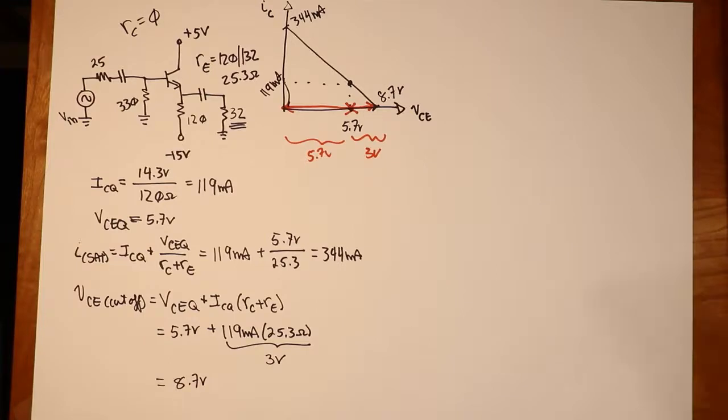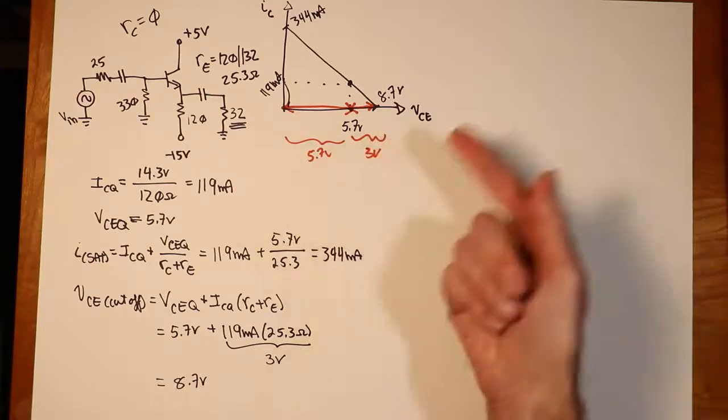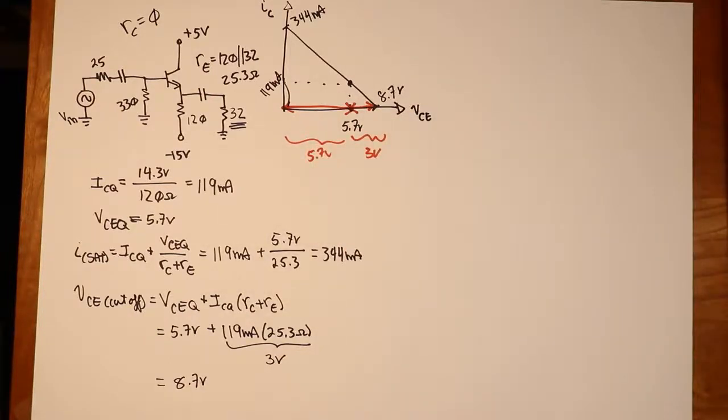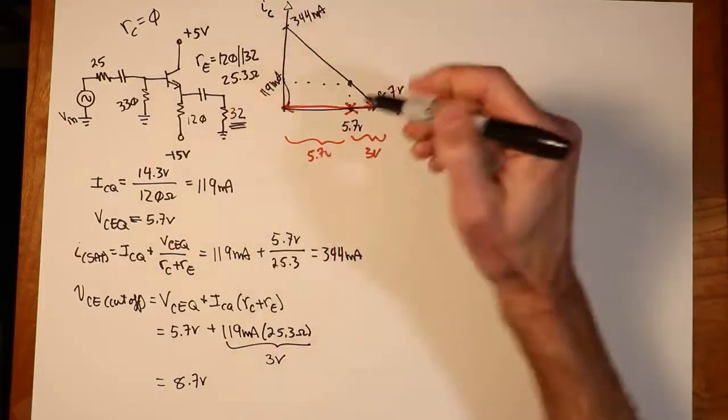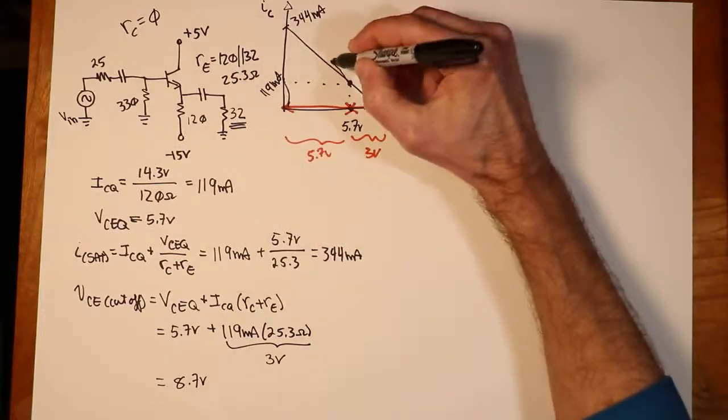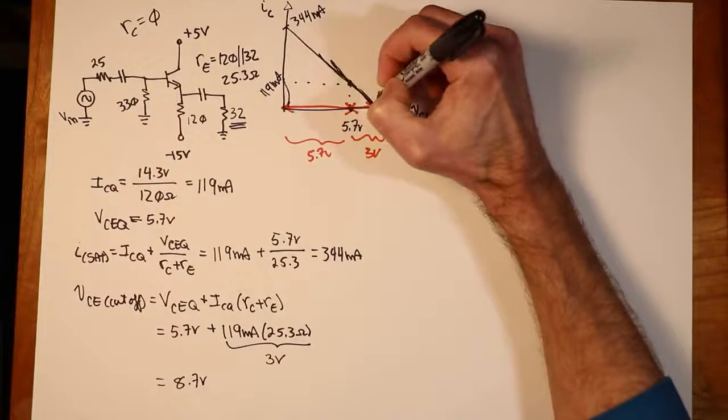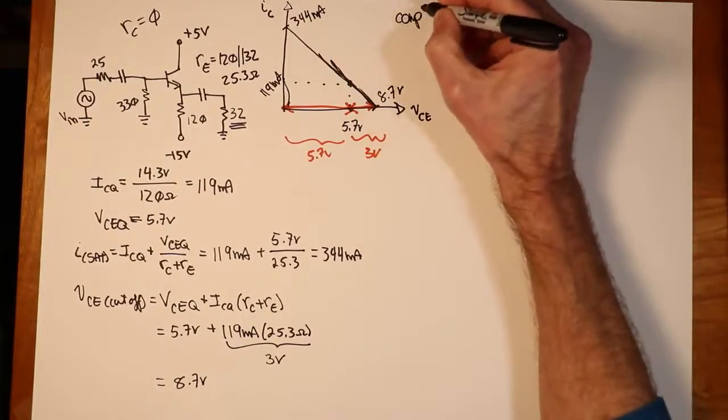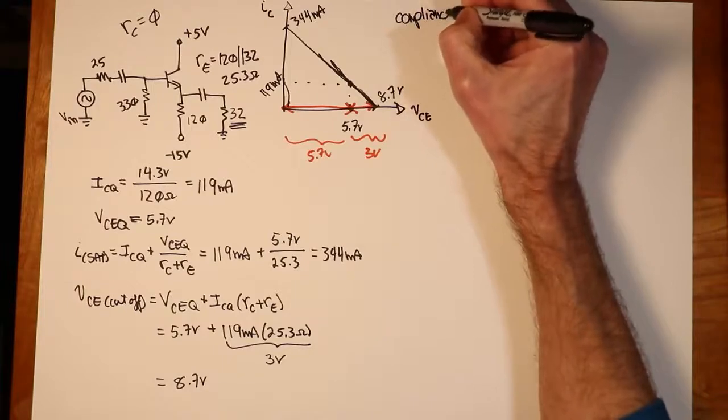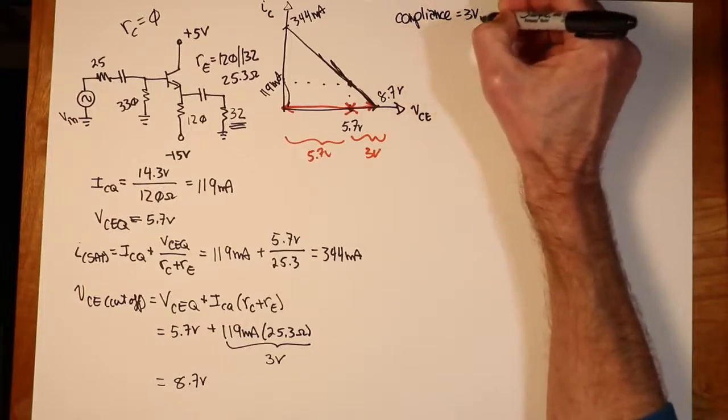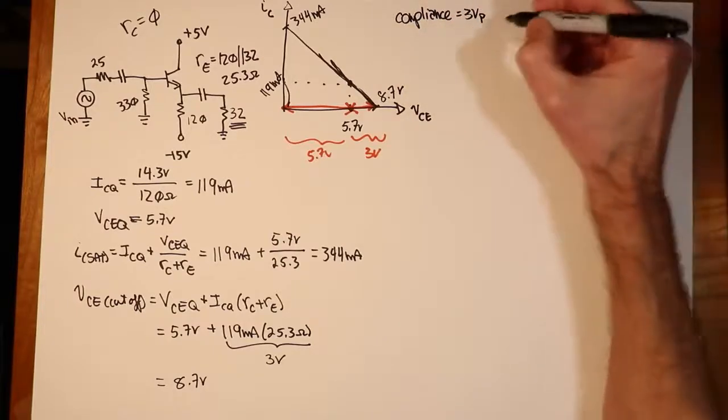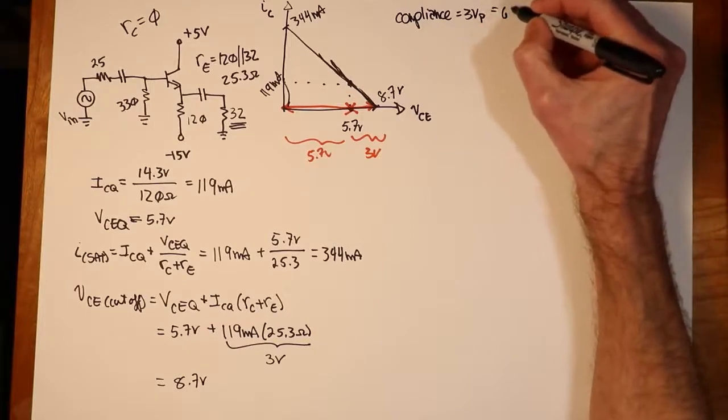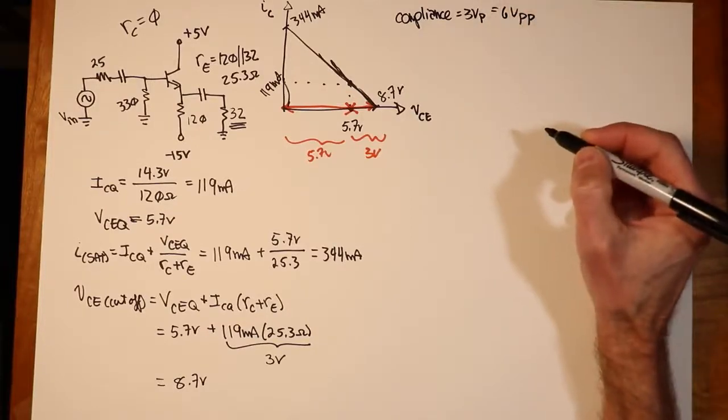So that 3 volts is the side that clips first. In other words, in this particular circuit, we get cutoff clipping before we get saturation clipping. If we thought of an input signal coming in here, this thing can swing up and down, basically 3 volts peak. So our compliance we can say is 3 volts peak. Or if you prefer, 6 volts peak to peak. The maximum peak to peak value.